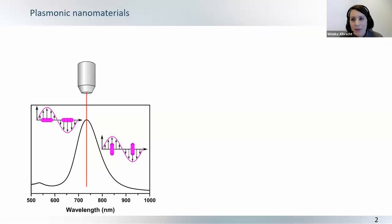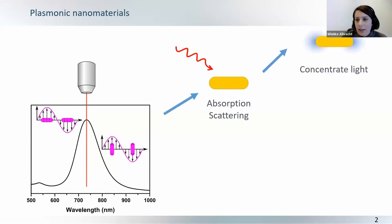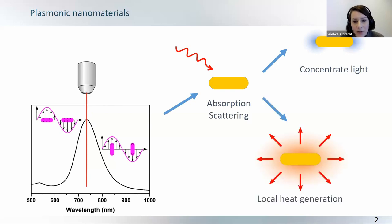But first, I don't need to tell you, I guess, why we're all excited about plasmonic nanomaterials. Of course, they're highly tunable and shape basically dictates almost everything in terms of optical properties. And upon absorption and scattering, we can on the one hand concentrate the light, but more importantly, that's why we're all here, we can locally generate heat.